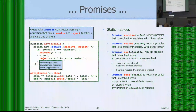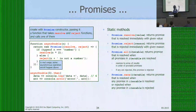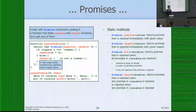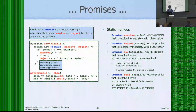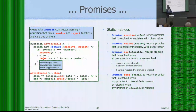Sometimes you want to do multiple asynchronous things and not proceed until they all finish. Use `Promise.all` and pass it an iterable — most often an array of promises. It waits for all of them to resolve and gives you back an array of all the results in the order you specified the promises. If any of them reject, the error callback is invoked. A counterpart is `Promise.race`: give it a bunch of promises and it waits for the first one to either resolve or reject, then the returned promise resolves or rejects with that same value.